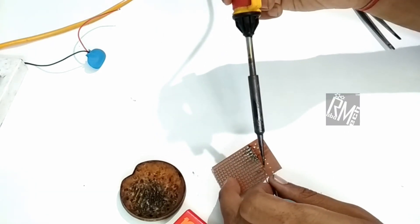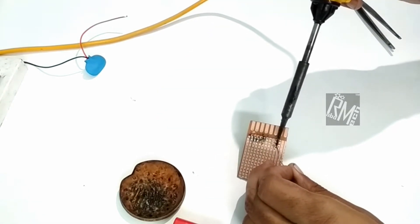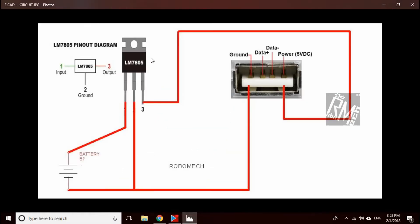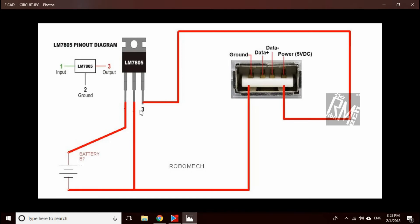Now we need to connect our LM7805 and USB female header according to this circuit diagram. The first pin is input, second pin is ground, and the third pin is output. As you can see, the first pin is connected to the positive of our 9-volt battery. The ground is common between the middle pin of the LM7805 and the first pin of the USB female header. The third pin, which is supplying 5 volts, is connected to the last pin of the USB female header.